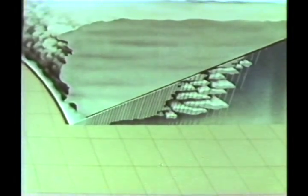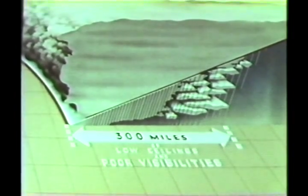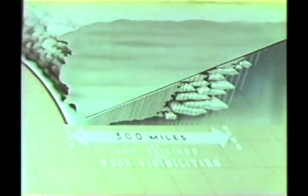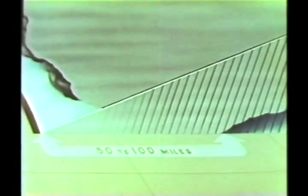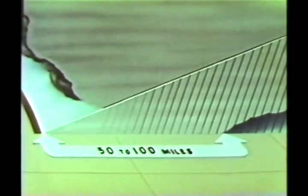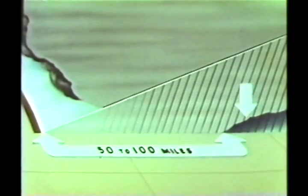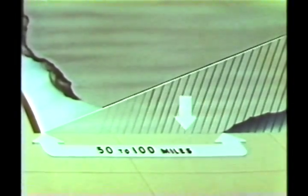Precipitation falling from these clouds causes lower clouds to form in the cold air underneath. The low clouds cause low ceilings and the precipitation restricts the visibility. These conditions may cover an area 300 miles or more in width. The cold air is very shallow for a distance of 50 to 100 miles in advance of the front. It is in this region that the low clouds generally lie on the earth's surface, causing the ceiling and visibility to be zero-zero due to prefrontal fog.